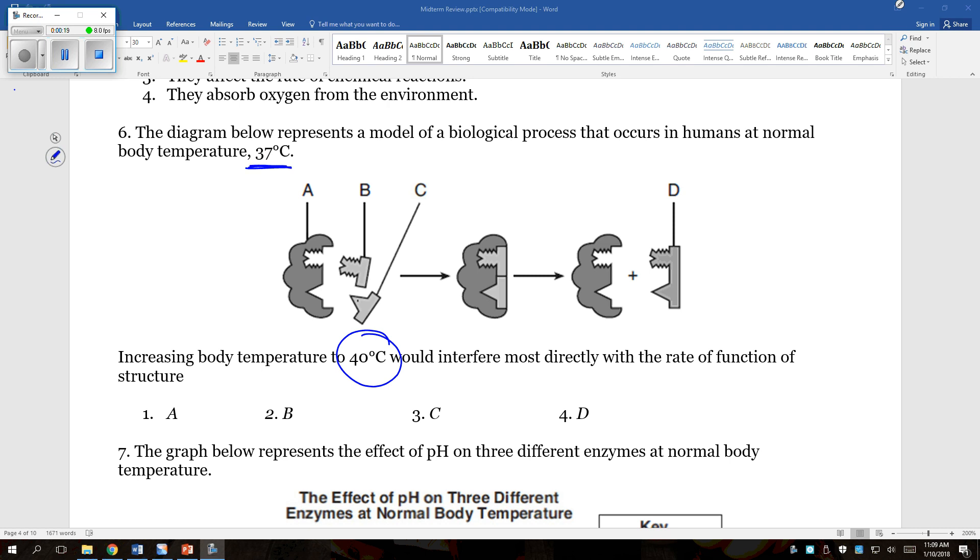Note up here it said normal body temperature is 37 degrees, would most likely interfere most directly with the rate of function of structure what? Now, if we're looking at this picture, it's going to be a picture of synthesis, meaning we're joining two molecules together in order to make a bigger molecule.